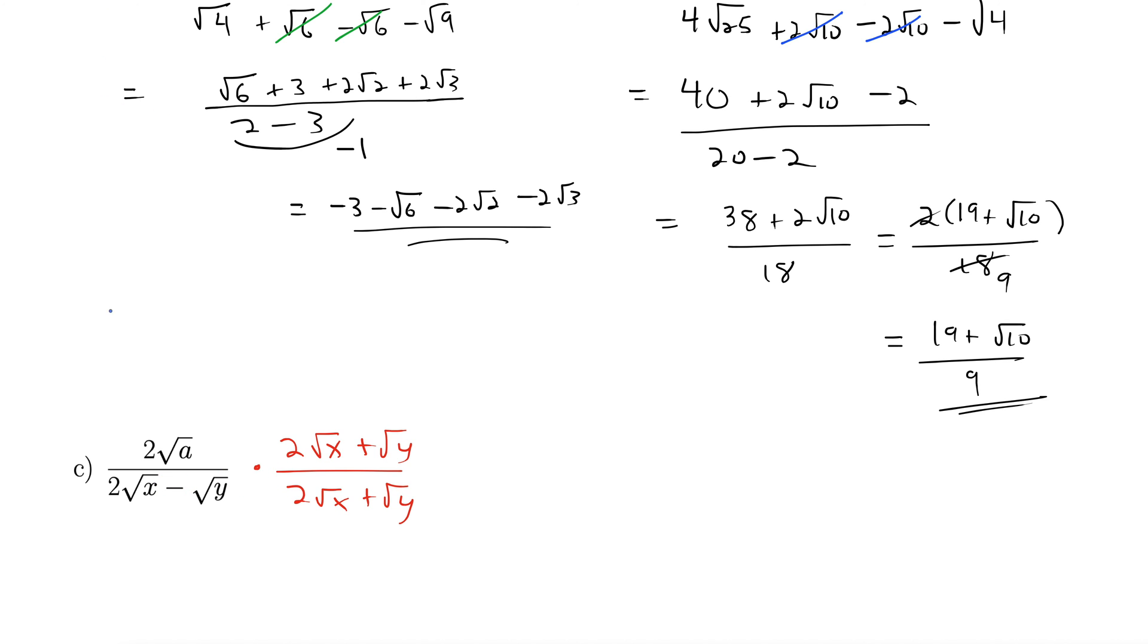Let's multiply these together. We'll put some parentheses in. We'll start in the numerator. Let's distribute this 2 rad a through to both terms. So we hit 2 rad x with that. It's going to give us 4 rad a x. And now we hit rad y plus 2 rad a y. Down below, let's do our FOIL. So first, 2 rad x times 2 rad x, 4 rad x squared.